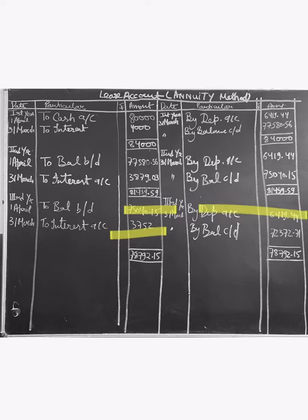Depreciation is fixed at 6,419.44. When we add these two, we get 78,792.15. Subtracting depreciation, our balance is 72,372.71.